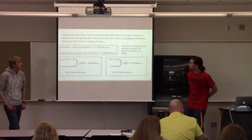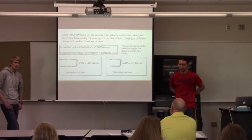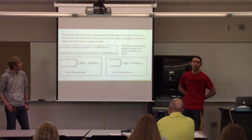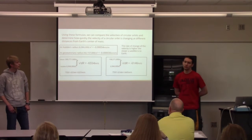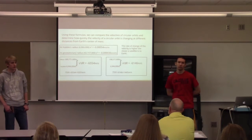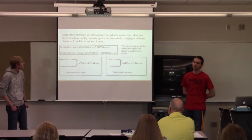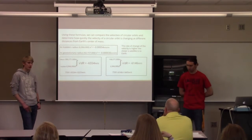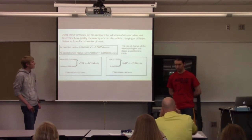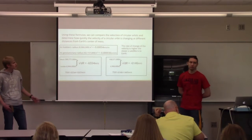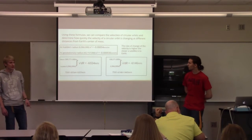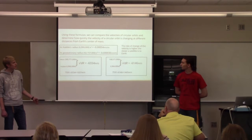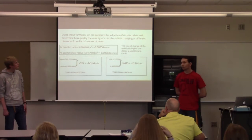So using these formulas, we can compare the velocities of circular orbits at different radii, and we can also see how quickly the velocities change at the different radii. At the radius which Hubble travels at, the velocity changes at negative 0.00054 meters per second per meter — so it's how quickly the velocity is changing as the distance increases.